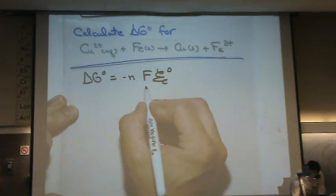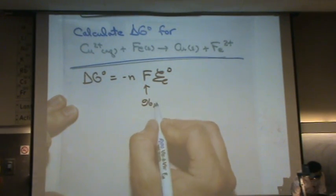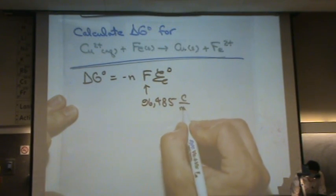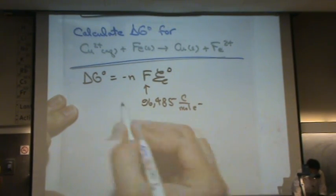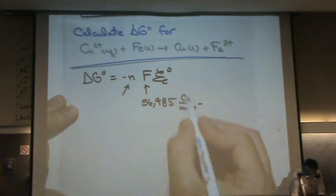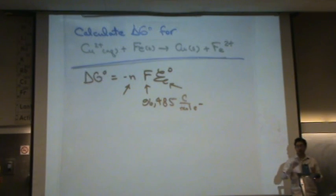So I need to know a couple things. That's a constant. I already know that. That's 96,485 coulombs per mole electrons. This is the amount of moles transferred, so I've got to find that. And this one's the cell potential, so I also need to find that.